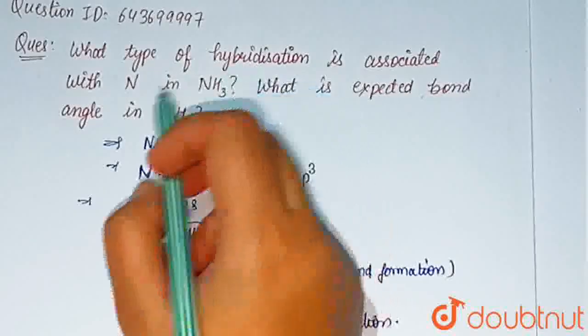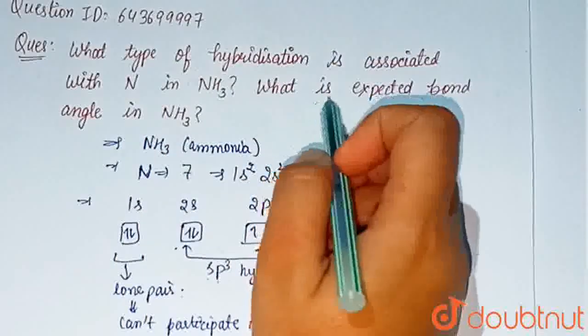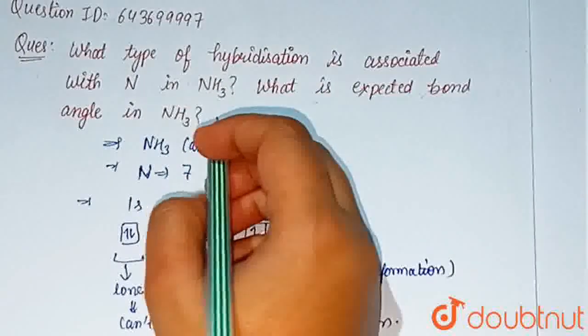So, the type of hybridization associated with NH3 is sp3 and bond angle in NH3 is 107 degrees.